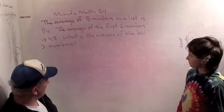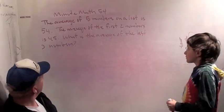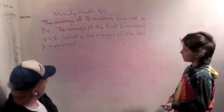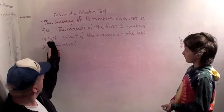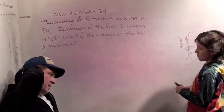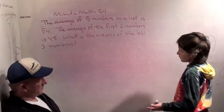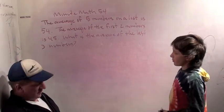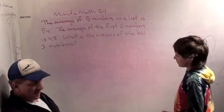You ready for the problem? The average of five numbers on a list is 54. The average of the first two numbers is 48. What is the average of the last three numbers? So what's the idea on this problem? We need to find the average of the last three numbers on the list.